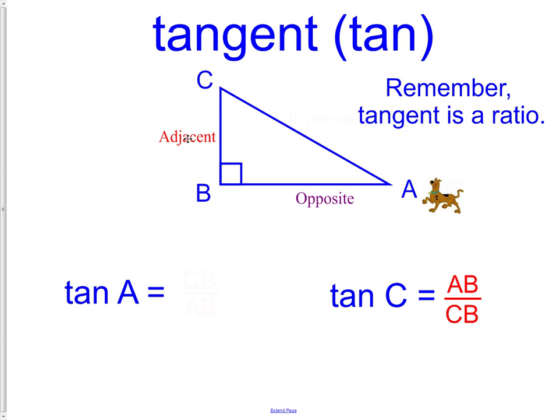If we move him over to angle A, we need to change the names. Opposite would now be CB, and adjacent would now be AB. Looks very similar to the tangent, but it's the reciprocal relationship.